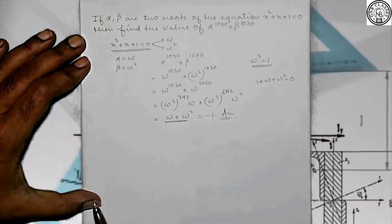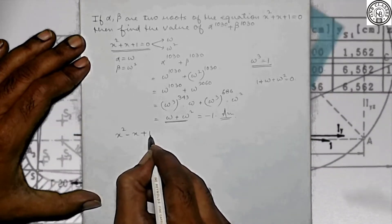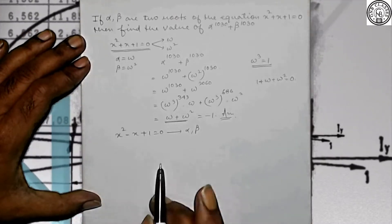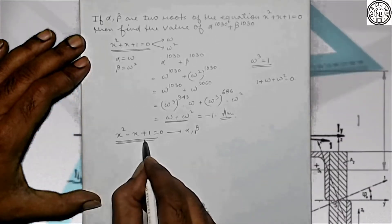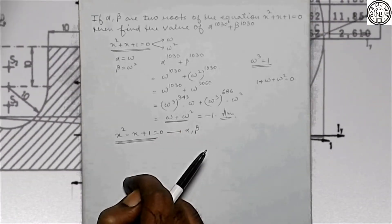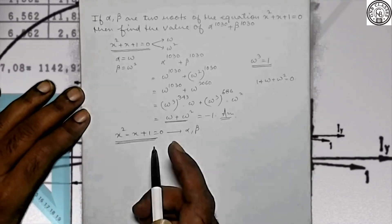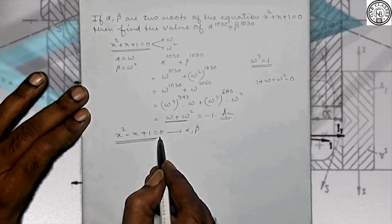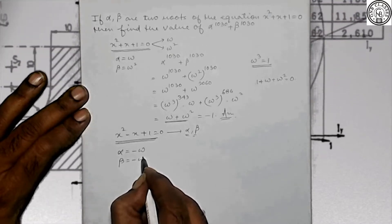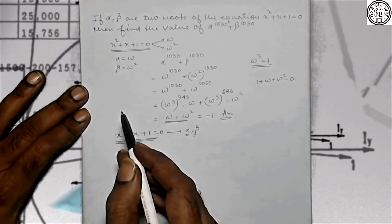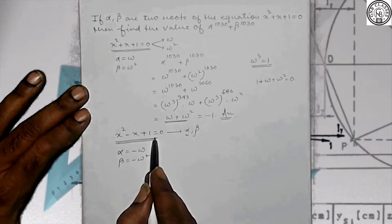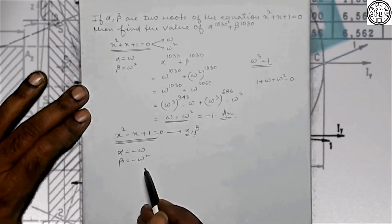If we twist the question a little and say the two roots of this equation are alpha and beta — as I told you — if you can remember the two roots, otherwise you will have to solve it. Remember: x² + x + 1 = 0 has two roots omega and omega square, while x² - x + 1 = 0 has two roots minus omega and minus omega square.